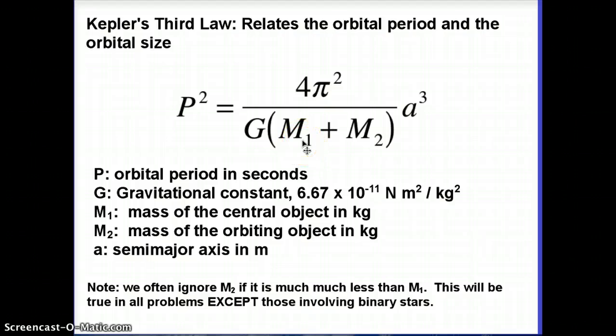M1 is the mass of the thing that's getting orbited. So if this is a planet going around the Sun, then M1 refers to the mass of the Sun. M2 is the mass of the thing that's doing the orbiting.